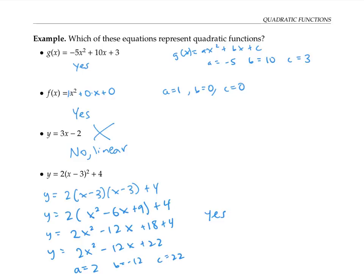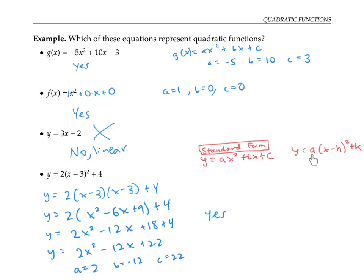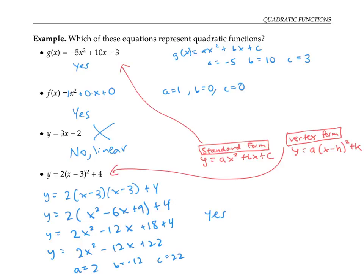A quadratic function already written in the form y = ax² + bx + c is said to be in standard form, so our first function g(x) is in standard form. A function written in the form y = a(x − h)² + k, for some real numbers a, h, and k where a is not zero, is said to be in vertex form. So this last example is in vertex form. We'll talk more about standard form and vertex form later on in this video.